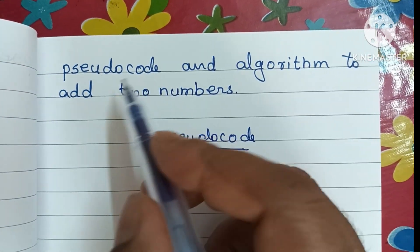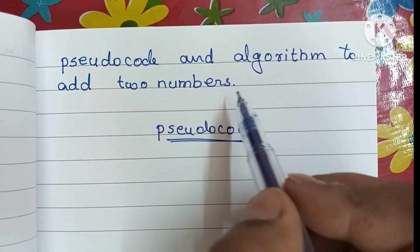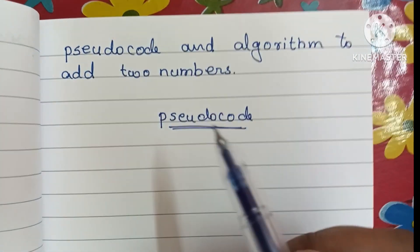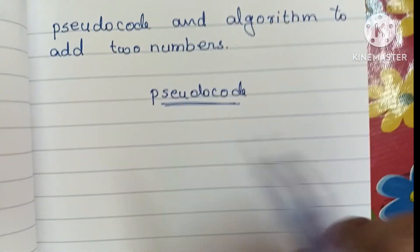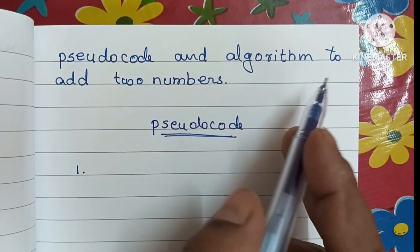Hi guys, in this video we're going to learn how to write pseudocode and algorithm to add two numbers. Pseudocode is a simplified programming language. It does not have any strict rules to follow.